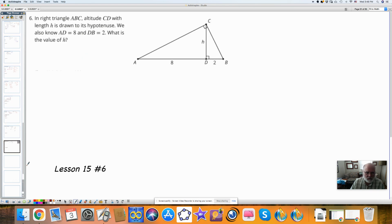Our last question. In the right triangle ABC, the altitude is drawn to the hypotenuse, length H. We know AD is 8 and DB is 2. What is the value of H?